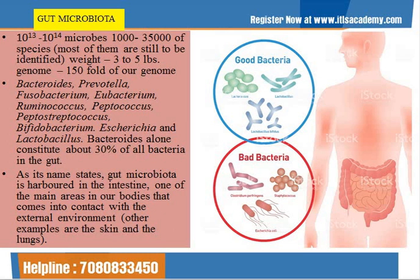We have 10 to the power of 13 to 10 to the power of 14 microbes, representing 1,000 to 35,000 species, most of which are still not identified. They weigh up to 3 to 5 lbs and their genome is 150-fold that of our whole genome. Good bacteria include Bacteroides, Fusobacterium, Ruminococcus, Peptococcus, Peptostreptococcus, Escherichia, and Lactobacillus.